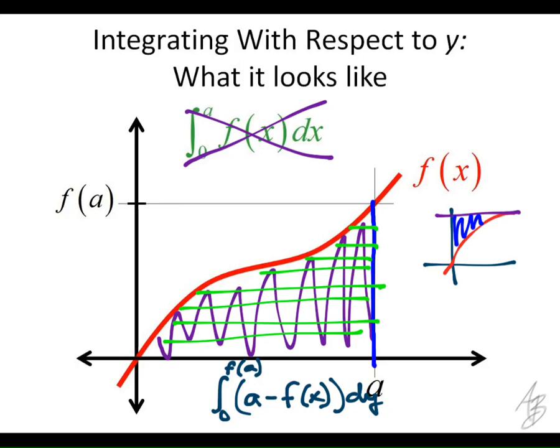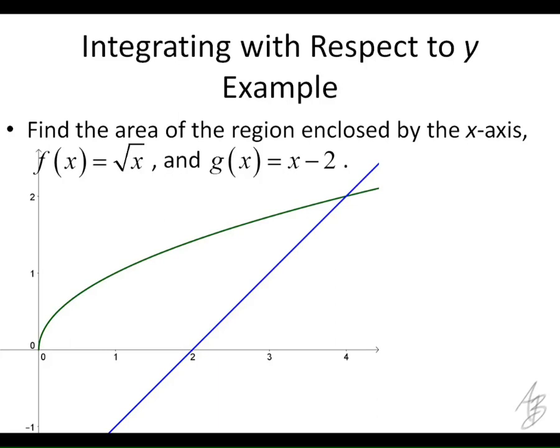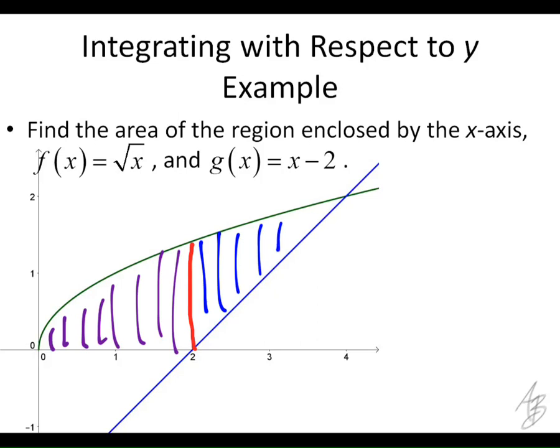All right, so what I want to do now is just look at some examples. And I want to look at this particular example. You guys remember this one? What we did on Friday, we did this a couple of different ways. We found the area by breaking it up, partitioning it right here at 2, and we found this area by taking the integral of the square root of x from 0 to 2, and we found this area by taking the integral of the square root of x minus x minus 2 from 2 to 4. That was one way we did it. We added those two together.